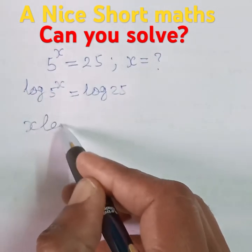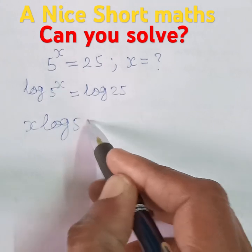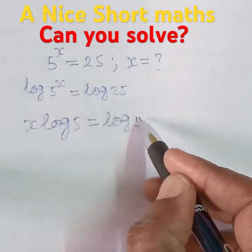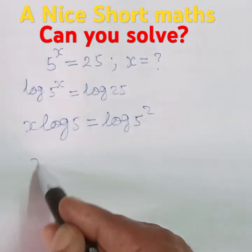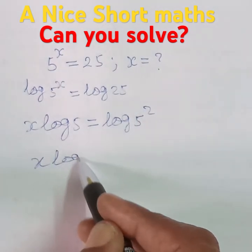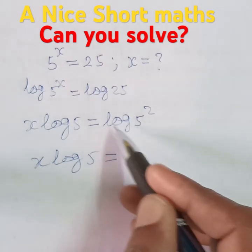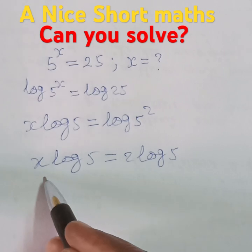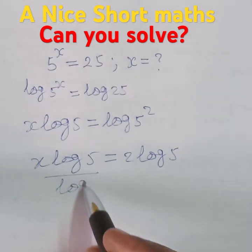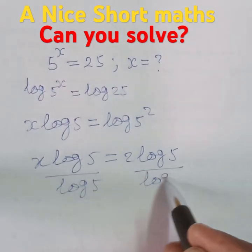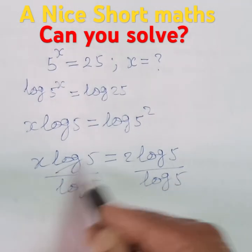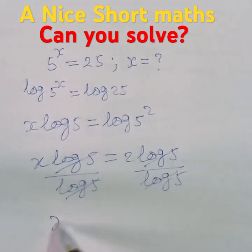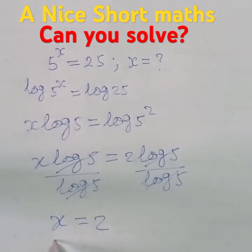25 means 5 squared, so x log 5 is equal to 2 log 5. Now we divide both sides by log 5 — log 5 cancels on both sides — and we get x is equal to 2. This is the answer.